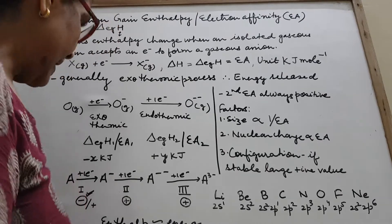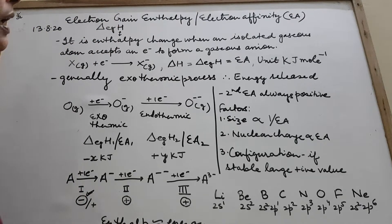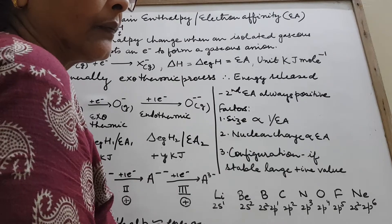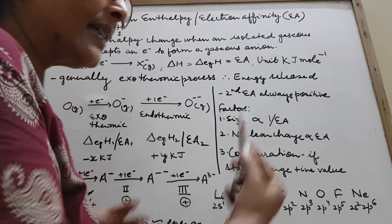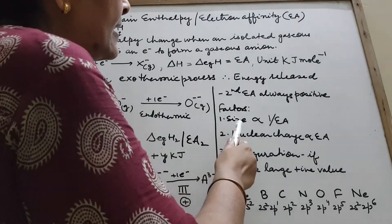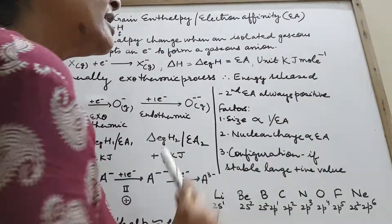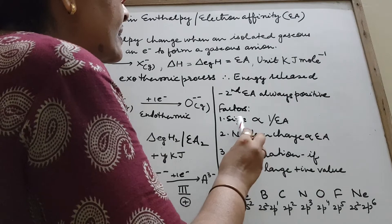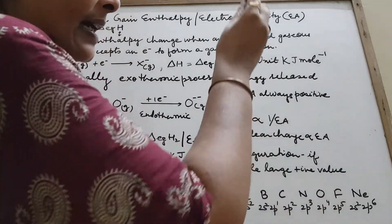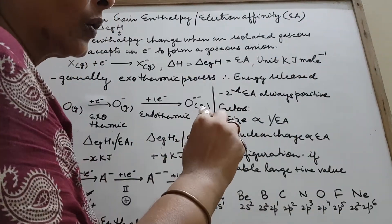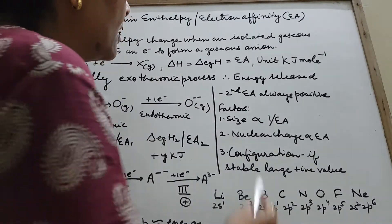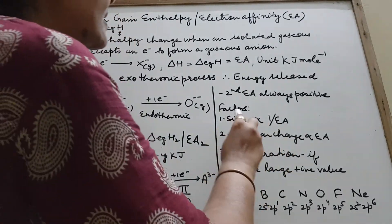Now let's look at the factors affecting electron gain enthalpy. First is size. Smaller the size, easier it is to attract and add an electron, and a large amount of energy is released. So smaller size → higher EA value. EA is inversely proportional to size. Bigger size → difficult to attract electron → less energy released.